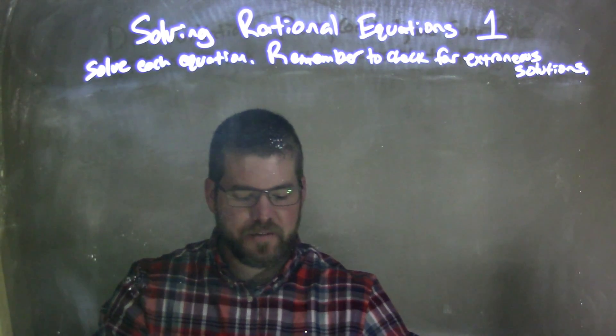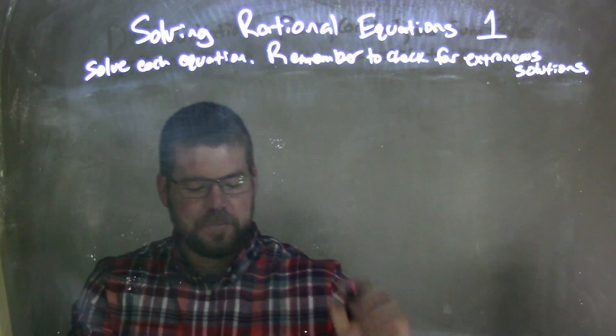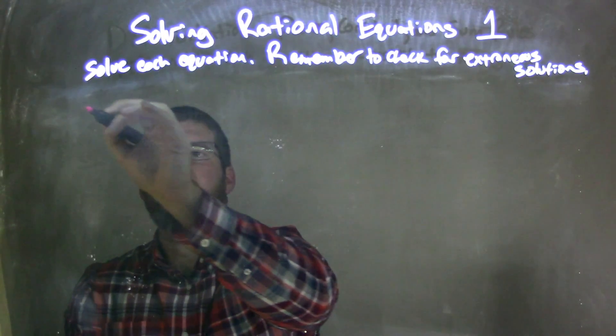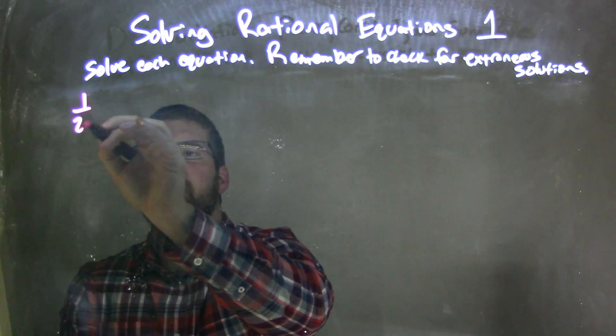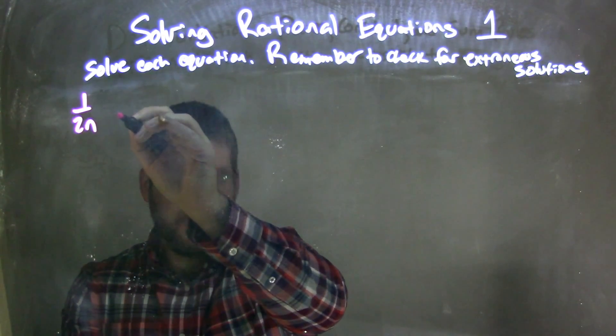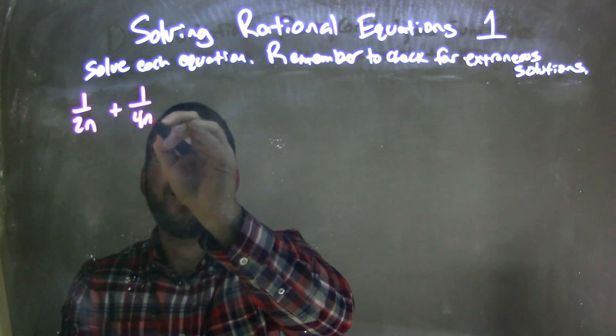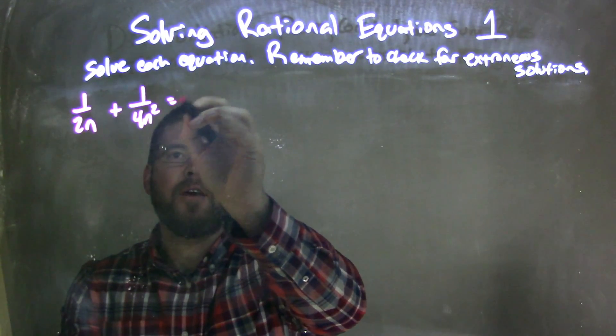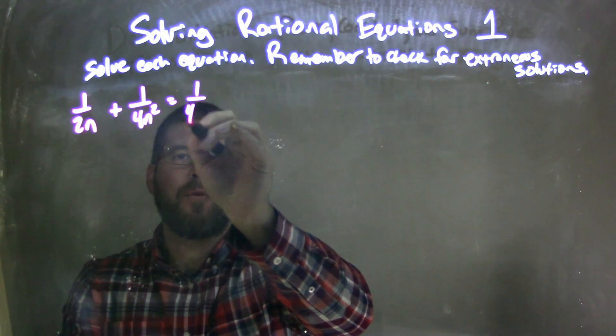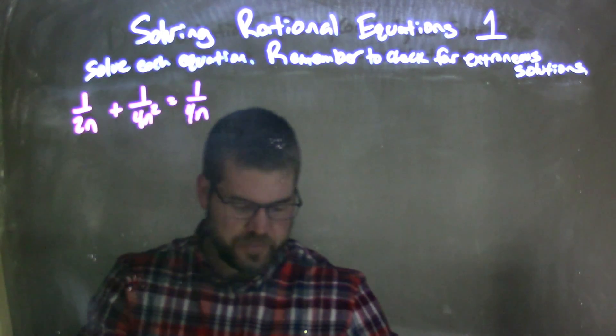So if I was given this equation: 1 over 2n plus 1 over 4n squared is equal to 1 over 4n.